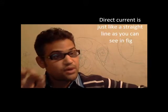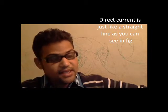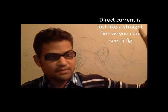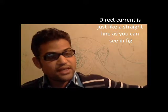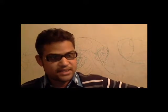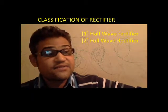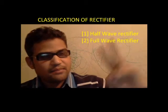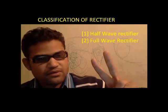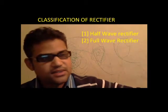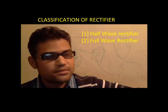Direct current is just like a straight line. You can see on the screen the different types of current examples. The classification of rectifier: basically there are two types — first is half wave rectifier and second one is full wave rectifier.